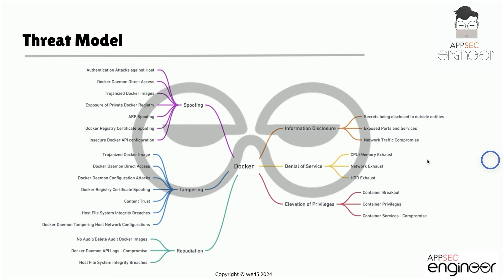Some of these have been repeated multiple times. When we talk about spoofing, if an attacker gains access to the host machine that's running all of these containers, no matter how secure your containers are or how secure your Docker implementation is, they can potentially gain access to all the running Docker containers as well. There are also ways an attacker can perform spoofing or tampering by trojanizing Docker images.